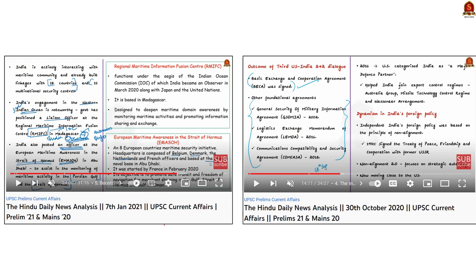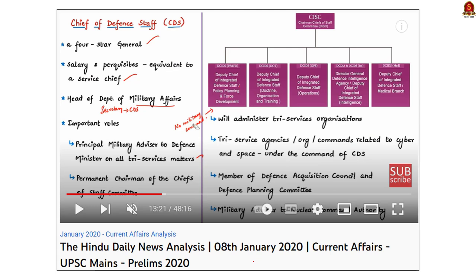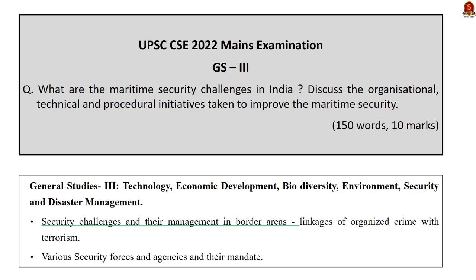For the second part on initiatives: for organizational initiative, quote India stationing a liaison officer at the Regional Maritime Information Fusion Center, seen on 7th January 2021. You can also quote GSOMIA, LEMOA, and COMCASA signed between India and the US, seen on 30th October 2020. For the technical initiative, quote the Indian Navy purchasing nine P-8I surveillance aircraft for Bay of Bengal surveillance, seen on 7th January 2021. For the procedural initiative, mention the creation of the office of CDS for better coordination between defense organs, covered in our 8th January 2020 Hindu News Analysis.